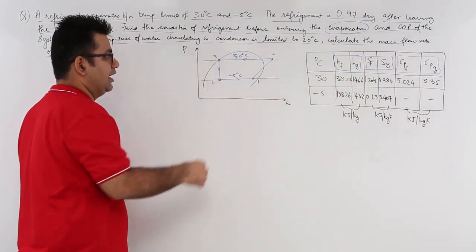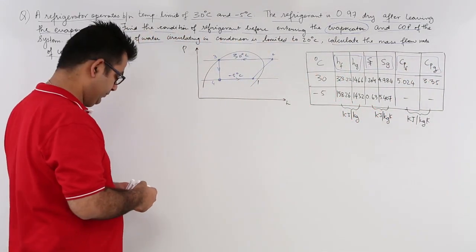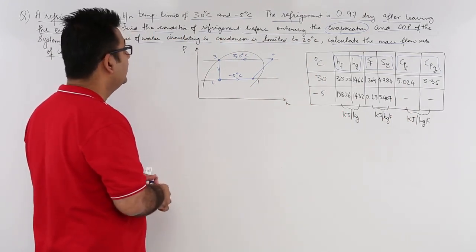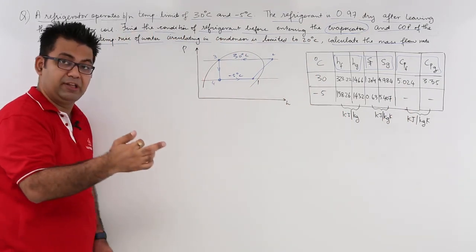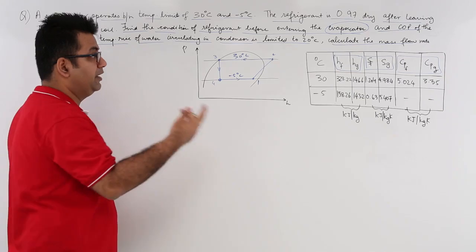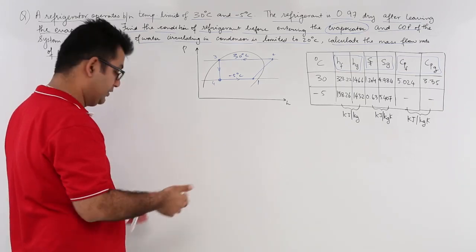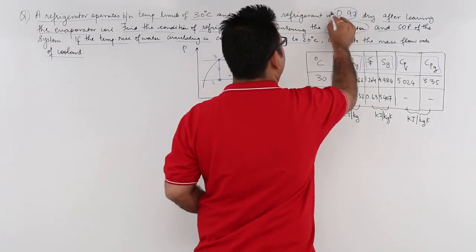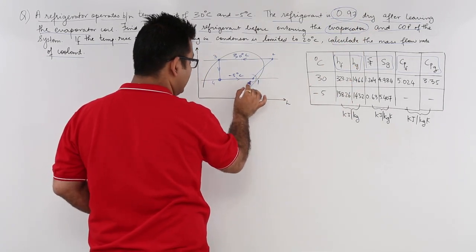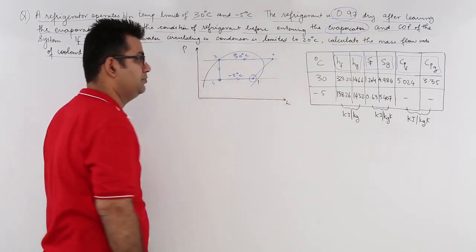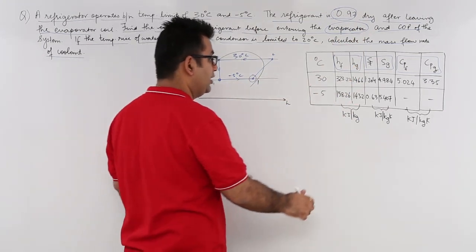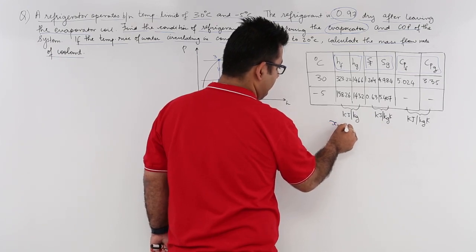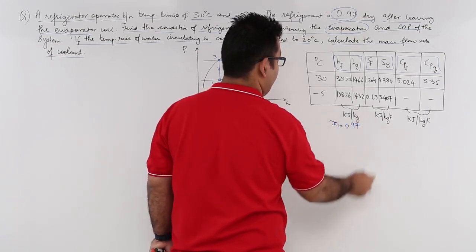This is how the cycle is running. Before the vapor enters the compressor it is 0.97 dry, so the dryness fraction at this point is x1 = 0.97.